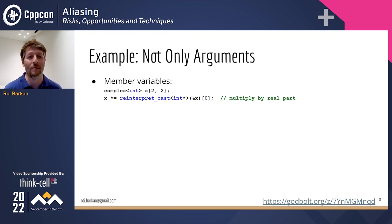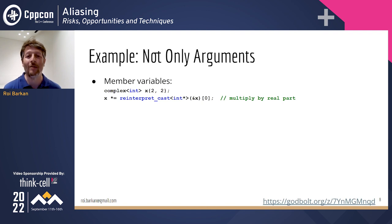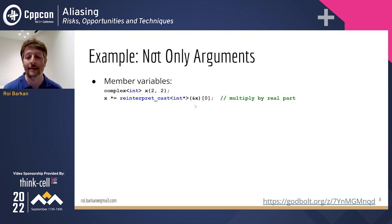The std::complex class is very similar to std::pair — it holds two members, one for the real and one for the imaginary part. If I take a complex number, say 2+2i, and want to multiply it by its real value, I would expect to get 4+4i. But I'll get an unexpected result because I'm multiplying x by one of its own members — there's aliasing between the multiplication argument and a member of the class.